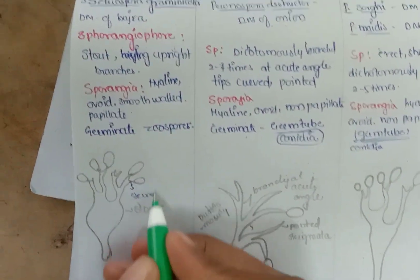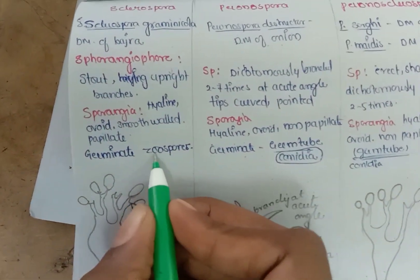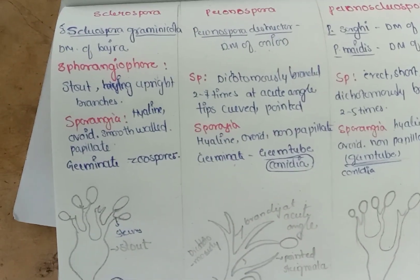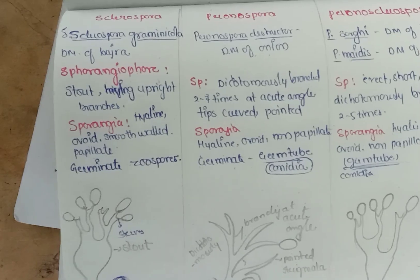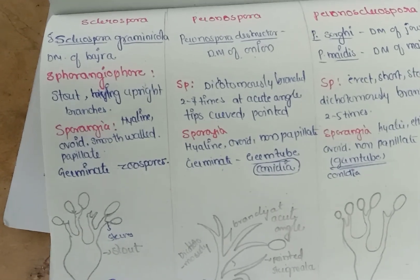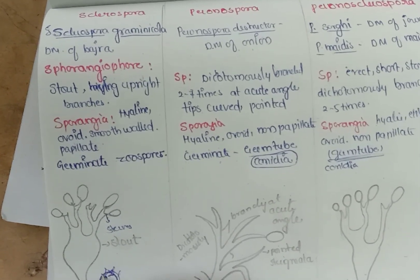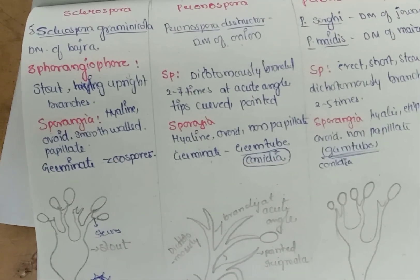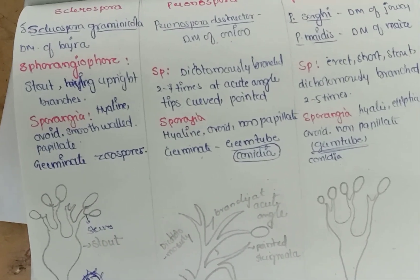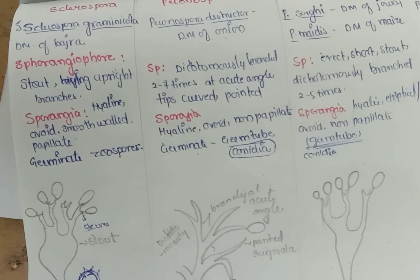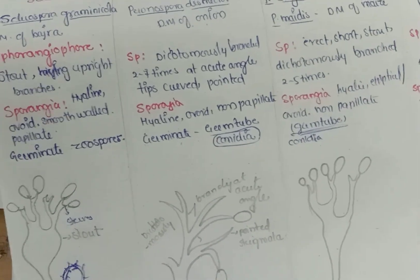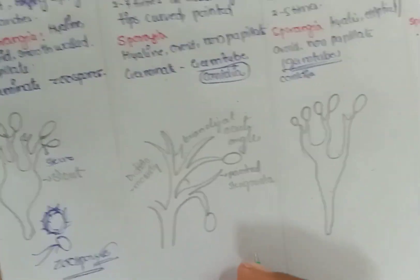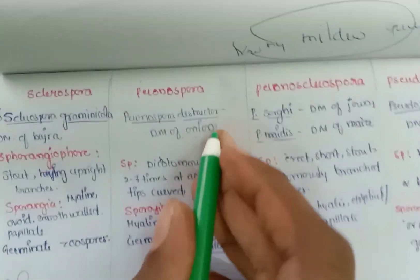The sporangia of Sclerospora are hyaline (colorless), ovoid, smooth-walled, and have papillate spine-like structures. They germinate through zoospores, which are motile and have a flagellum, allowing them to move and germinate.